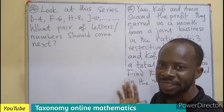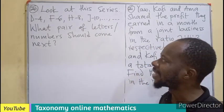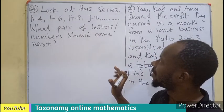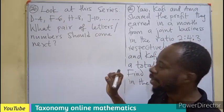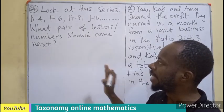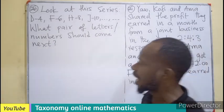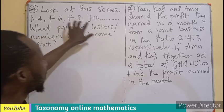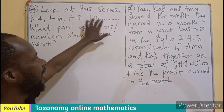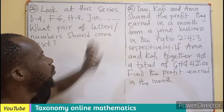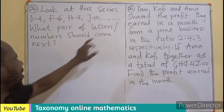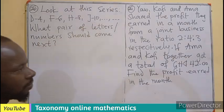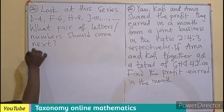Continuation of the questions on the Ghana Teacher Online sectional exam. We are given a sequence and a series that make use of numbers and letters. We have D4, F6, H8, J10, and we need to find the next two letters and numbers that will come after this.